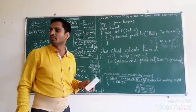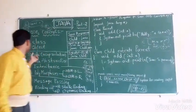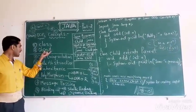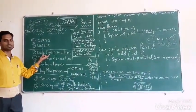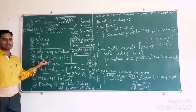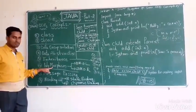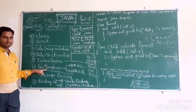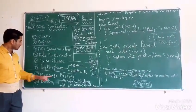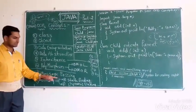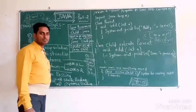The basic concepts of OOPS are: Class, Object, Data Encapsulation, Data Abstraction, Inheritance, and Polymorphism. Extra features added in institutes are Message Passing and Binding.